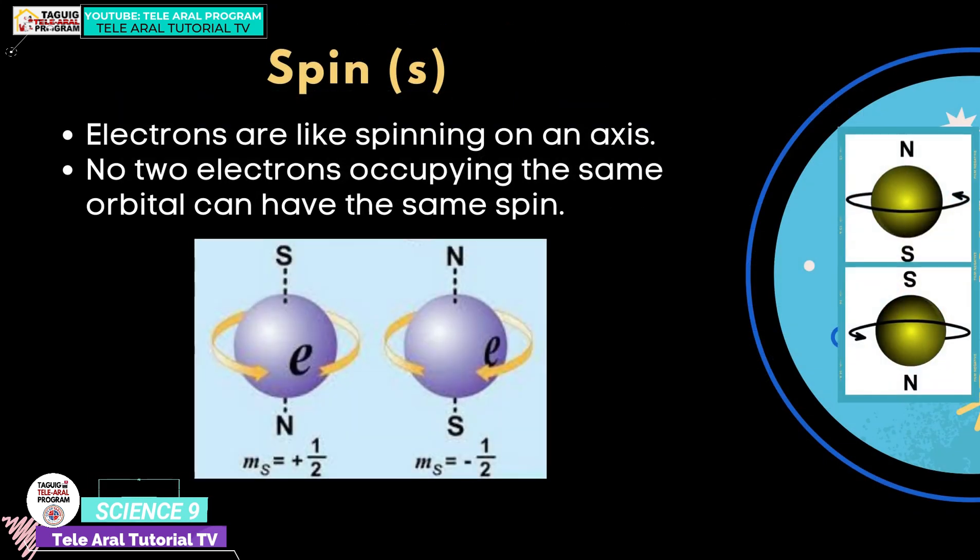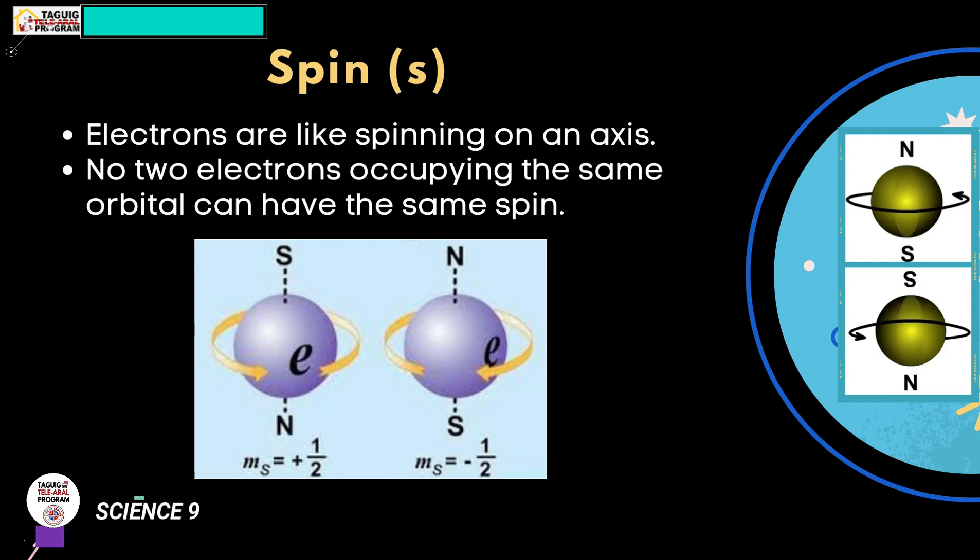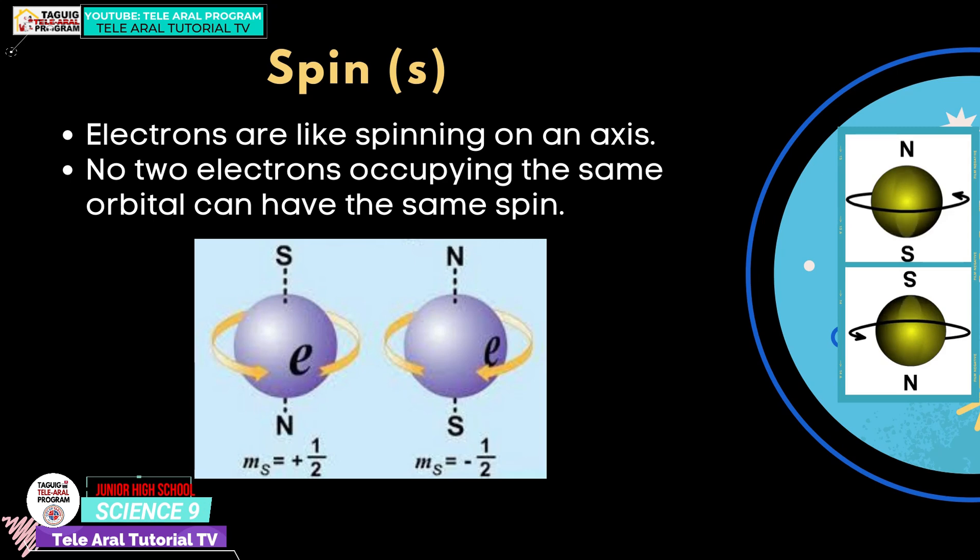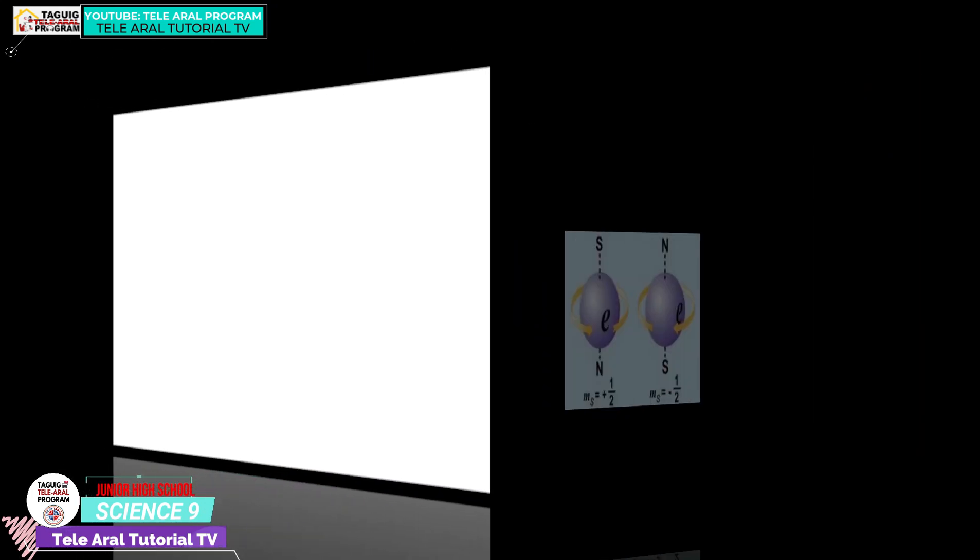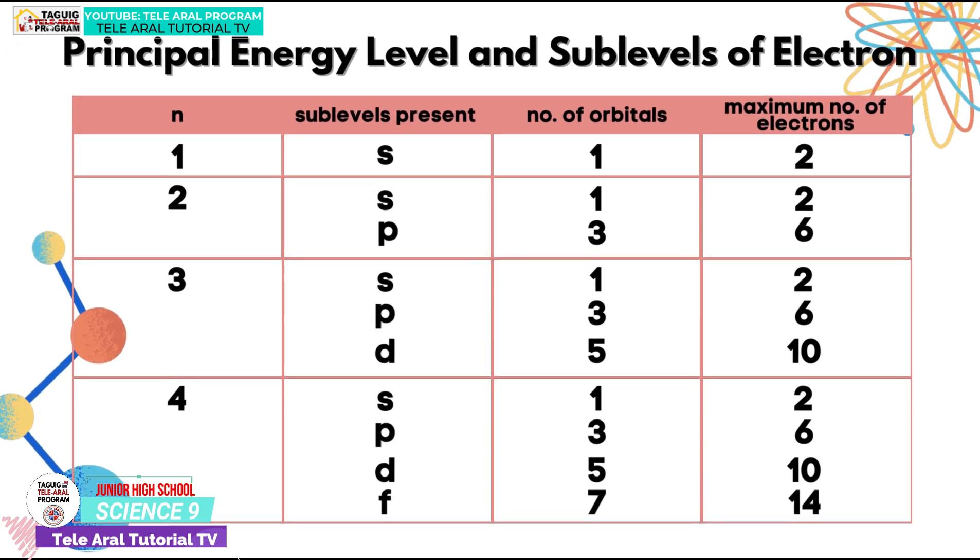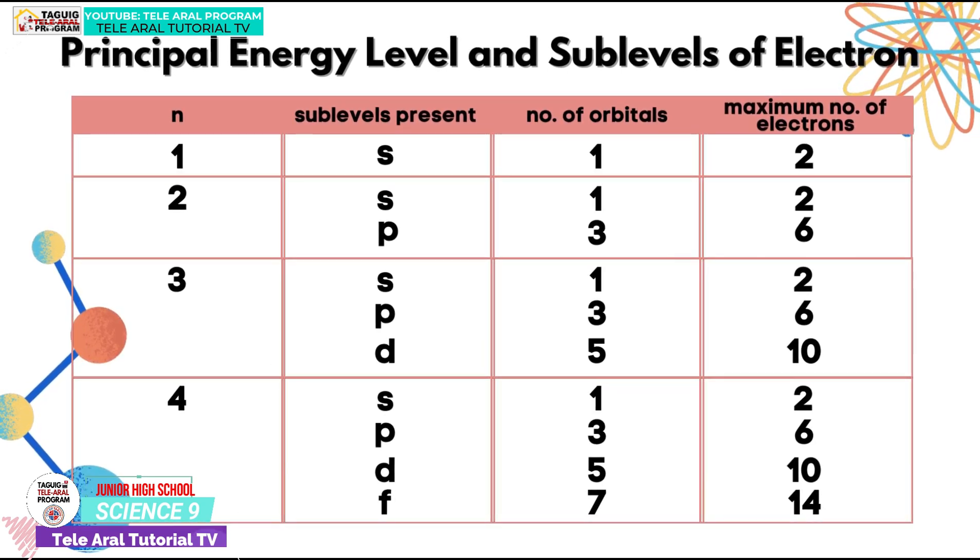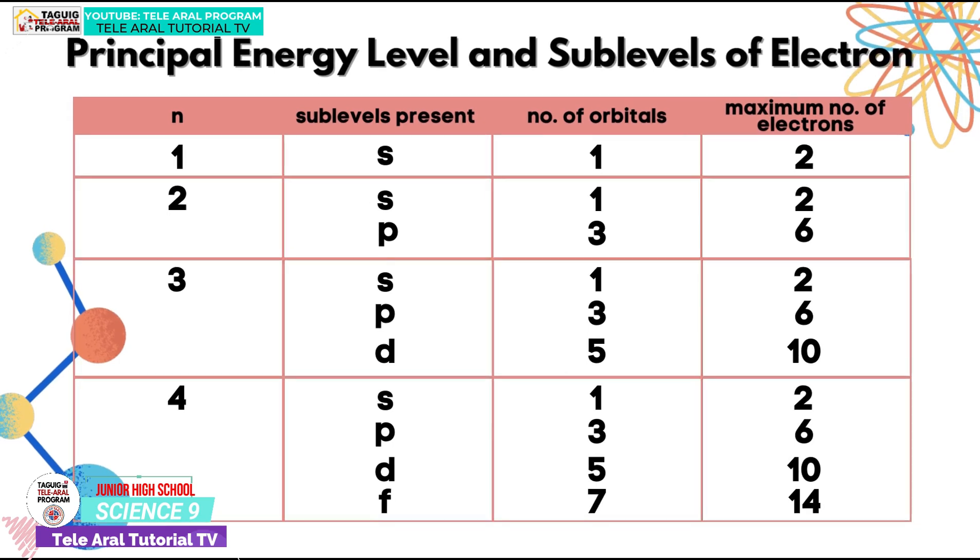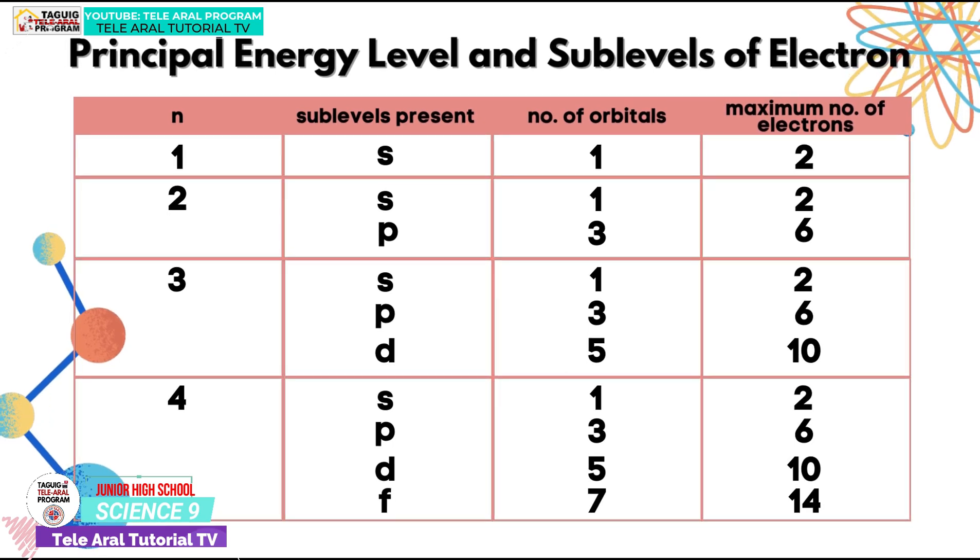In each orbital can be found two electrons. These electrons are like spinning on its axis. However, these two electrons should have an opposite spin in each of the orbital. To summarize everything, here's the table for the corresponding sublevels, number of orbitals, and maximum number of electrons per each energy level.